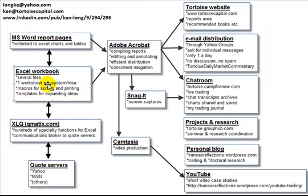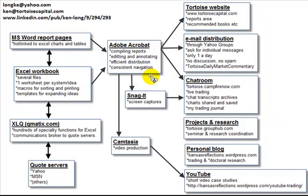I hotlink segments of the Excel workbooks into MS Word in order to generate reports, so that whenever Excel changes, the reports in Word change, and when I open up Word it automatically fetches the most current information. I then print reports into Adobe Acrobat from both MS Word and from certain tables inside Excel directly. I use Adobe to compile these different reports for editing and annotating, and then distribute small compact packages with consistent navigation.